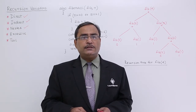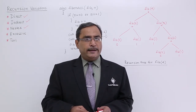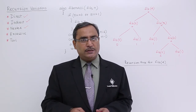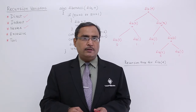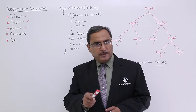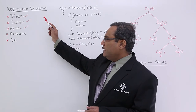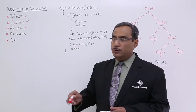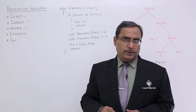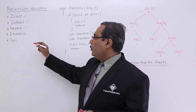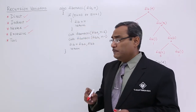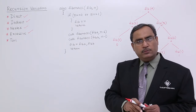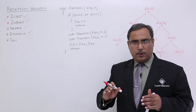We are discussing different variations of recursion: direct, indirect, nested, excessive recursion, and tail recursion. In our previous videos, we have discussed direct recursion, indirect recursion, and nested recursion. In this video, we are going to discuss excessive recursion. Please watch the previous videos for direct, indirect, and nested recursion, as we have explained each and everything with proper examples.